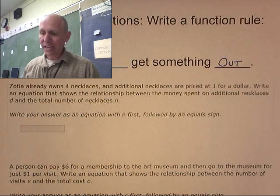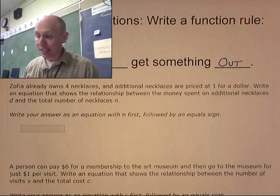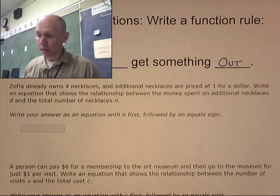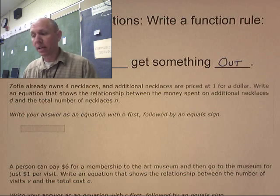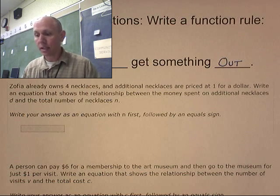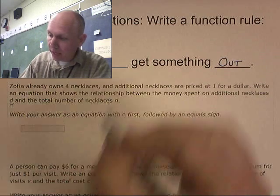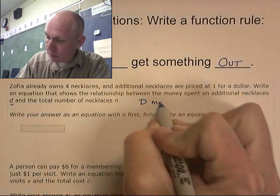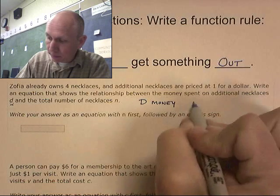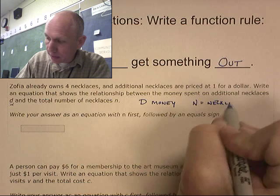Zofia already owns four necklaces. In addition, additional necklaces are priced at one for a dollar. Write an equation that shows the relationship between the money spent on additional necklaces D, and the total number of necklaces N. So D is money and N is necklaces.